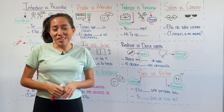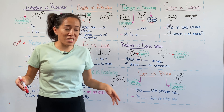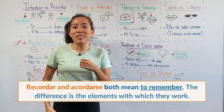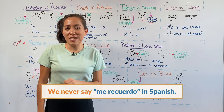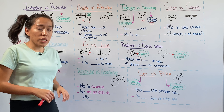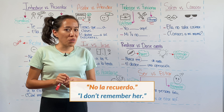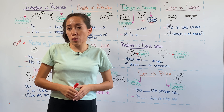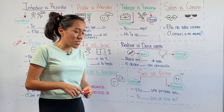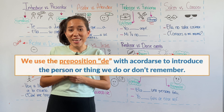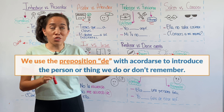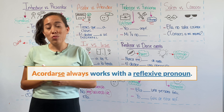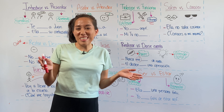Recordar versus acordarse. The meaning is the same — we use both to talk about memories, things that we remember. The problem is the elements used. Heads up: we never say me recuerdo in Spanish. We can say no la recuerdo, I don't remember her. We can also say no me acuerdo de ella — but notice that with acordarse, you need the preposition de and reflexive pronouns. Recordar is simpler and doesn't need all those elements.